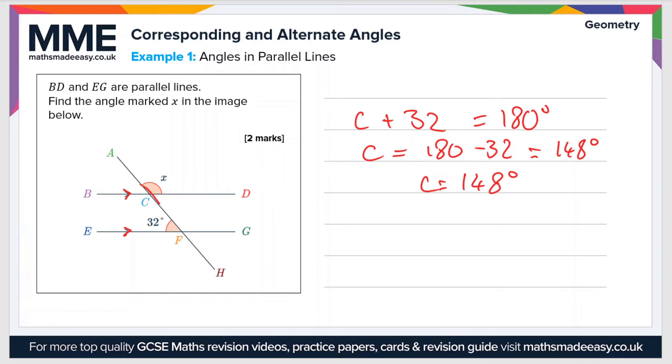Now if we have a look at C and X, we can see that they are vertically opposite angles. And the rule in that case is that vertically opposite angles are the same. So C equals X. In other words, X equals 148 degrees.